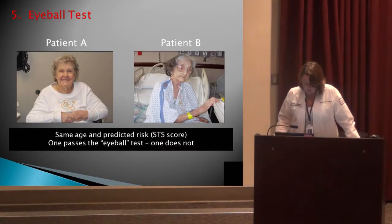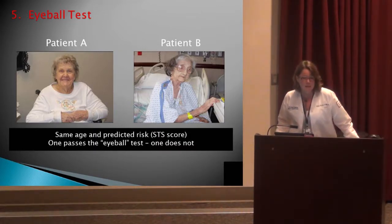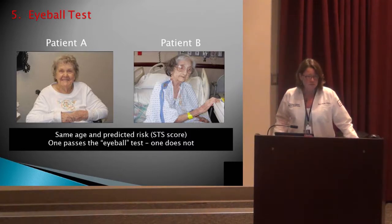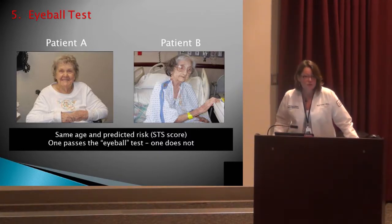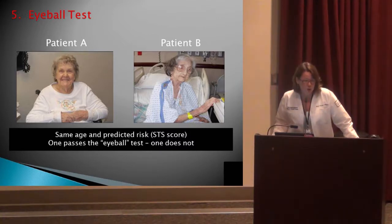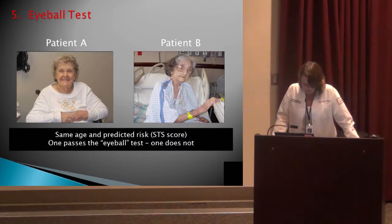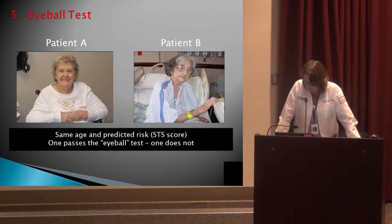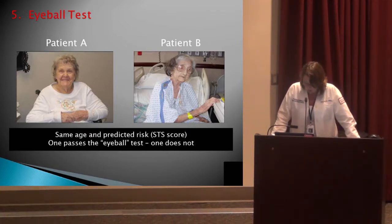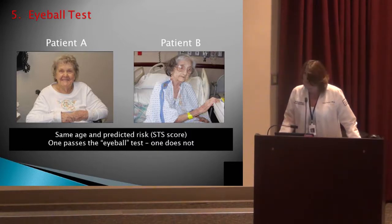Another frailty measurement is the eyeball test — it's somewhat subjective, but you assess whether someone appears frail just by looking at them. Shown here are two patients, A and B, with the same age and same surgical risk score — but obviously one does not pass the eyeball test.